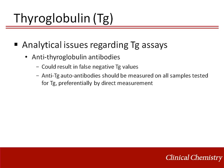Interference caused by antithyroglobulin autoantibodies remains the most serious problem limiting the clinical utility of thyroglobulin testing. Antithyroglobulin autoantibodies are detected in up to 30% of patients with differentiated thyroid cancer compared with the 10% incidence reported for the general population. Antithyroglobulin antibody interference is characterized by undetectable or low thyroglobulin levels using immunometric assays. Due to this problem, various practice guidelines, including those from the National Academy of Clinical Biochemistry and the American Thyroid Association, stress that antithyroglobulin autoantibodies should be measured on all samples tested for thyroglobulin. Failure to detect thyroglobulin antibody interference in the presence of an undetectable thyroglobulin value could greatly impact patient management as disease recurrence might go undiagnosed.